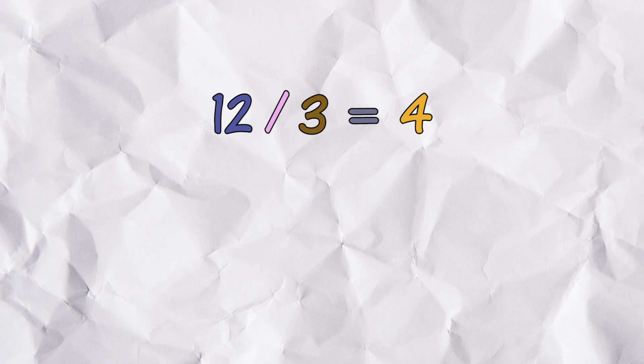But don't go too far. The commutative law does not work for division. 12 divided by 3 equals 4, but 3 divided by 12 equals one fourth.